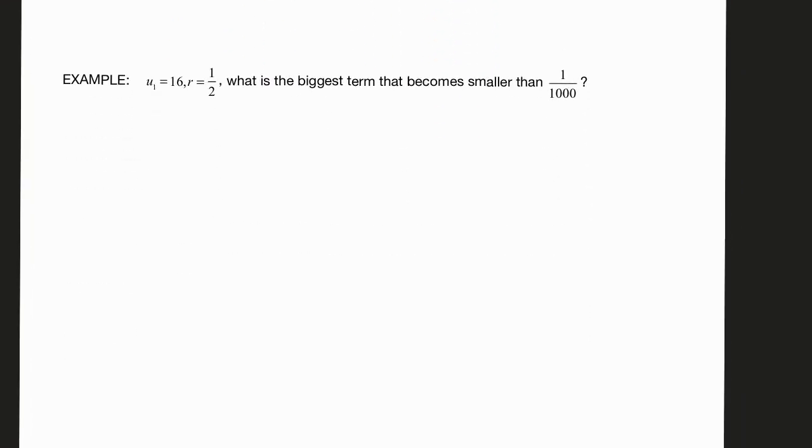All right and then scooting this up. In this problem I know the first term and I know the ratio. So let me write this in: the first term and the ratio. So it's asking what is the biggest term, like is it the third term the fourth term the fifth term that becomes smaller than 1/1000. Okay this is so much easier to do on the calculator so let me jump right into that.